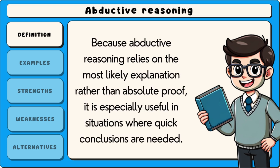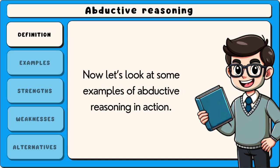Because abductive reasoning relies on the most likely explanation rather than absolute proof, it is especially useful in situations where quick conclusions are needed. Now let's look at some examples of abductive reasoning in action.